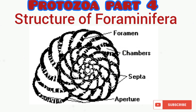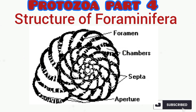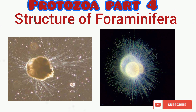The aperture, as you can see from the diagram, is the main opening of the chamber cavity into the external environment. Some species possess one aperture while others may possess two or more. The first chamber is regarded as the proloculus, the second as the deuteroloculus, and so on. The septa are the walls between chambers, while the foramen is the hole passing through this wall.